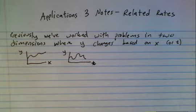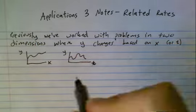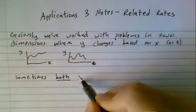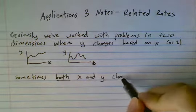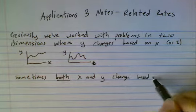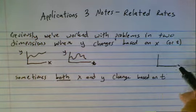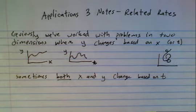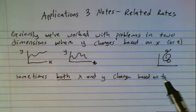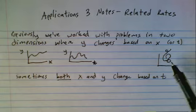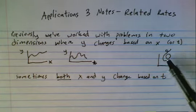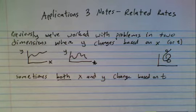Sometimes, however, both x and y are changing based on a third variable, typically t. So that might look something like this. Notice it's not a function at all — it's actually something called a parametric equation. What's happening is that if we think of some third variable t, as t changes, you can imagine this is like a little bug crawling around. Both x and y are changing as that bug crawls.